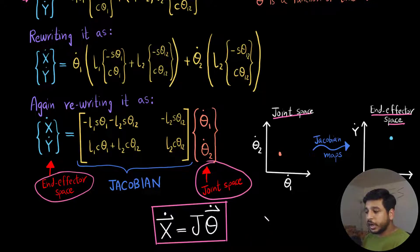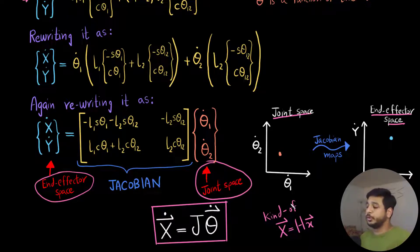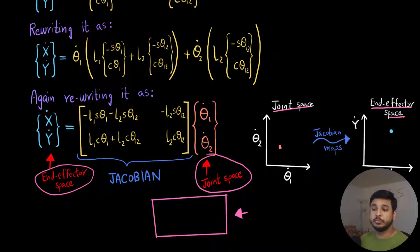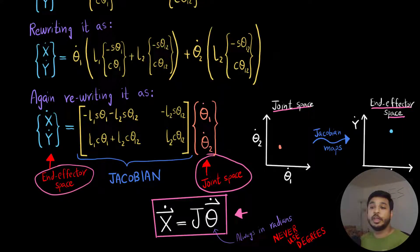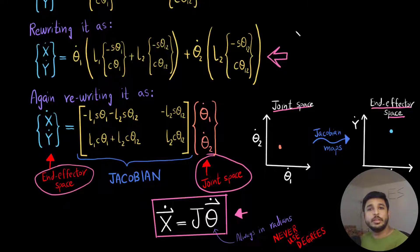This equation is kind of similar to the homogeneous transform equation. One important thing to note is that whenever you use this equation, you must always use angular velocities in radians, never in degrees — just make a mental note of that. In the next video, we are going to dissect this equation and learn what velocity ellipsoids are. See you in the next video.